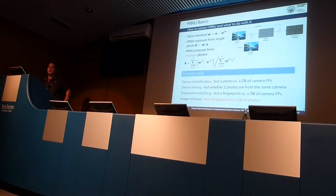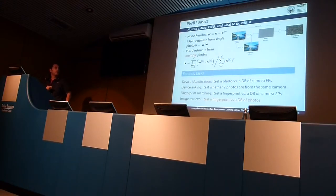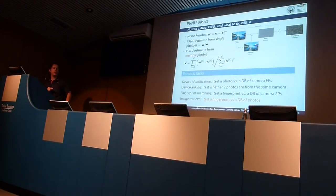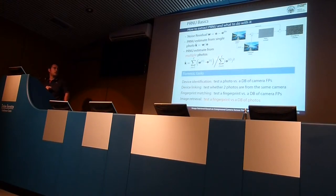How do you exploit PRNU in a particular application? You have to estimate the fingerprint. You can estimate it by computing a noise residual: take a picture, denoise it to obtain an ideally clean picture, then subtract the denoised picture from the original to obtain the noise residual. According to our model, this noise residual is the picture modulated by the fingerprint. Dividing the noise residual by the picture gives an estimate of the PRNU fingerprint. With multiple available pictures, you can use maximum likelihood estimation — a weighted average of different noise residuals.